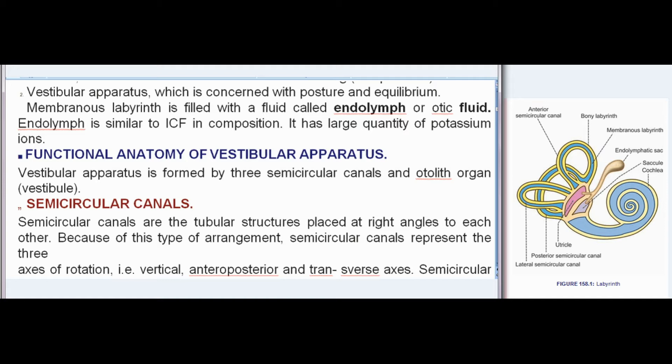Endolymph is similar to intracellular fluid (ICF) in composition and has a large quantity of potassium ions. Functional anatomy of the vestibular apparatus: the vestibular apparatus is formed by three semicircular canals and the otolith organ, also called the vestibule.